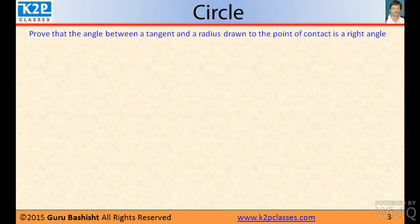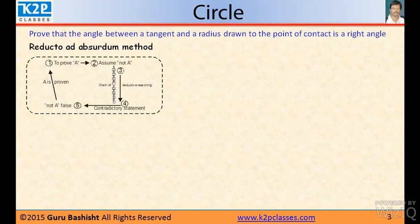Prove that angle between a tangent and radius drawn to the points of contact is right angle. Here we will use a particular technique that is called reductio ad absurdum method. What is that method? We have to prove something A. Then we will assume not A. And we do chain of operations and then we will come to a point which contradicts our statement that not A. That means not A is false and that means A is true.